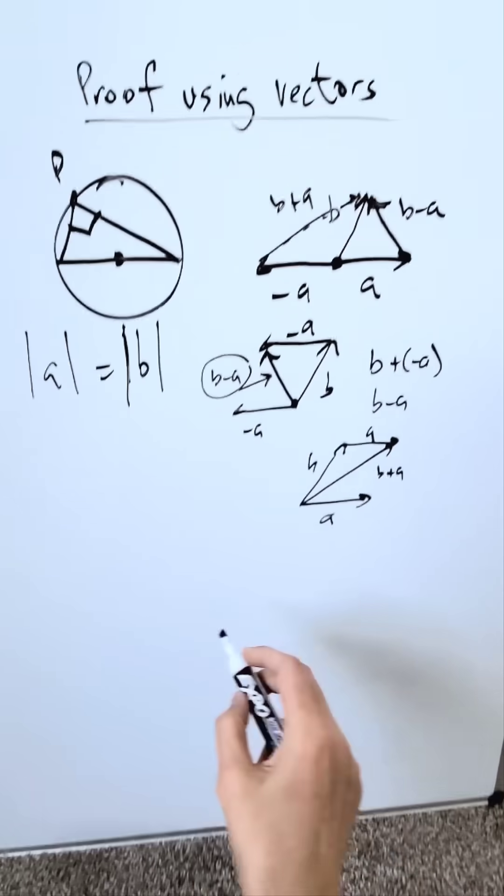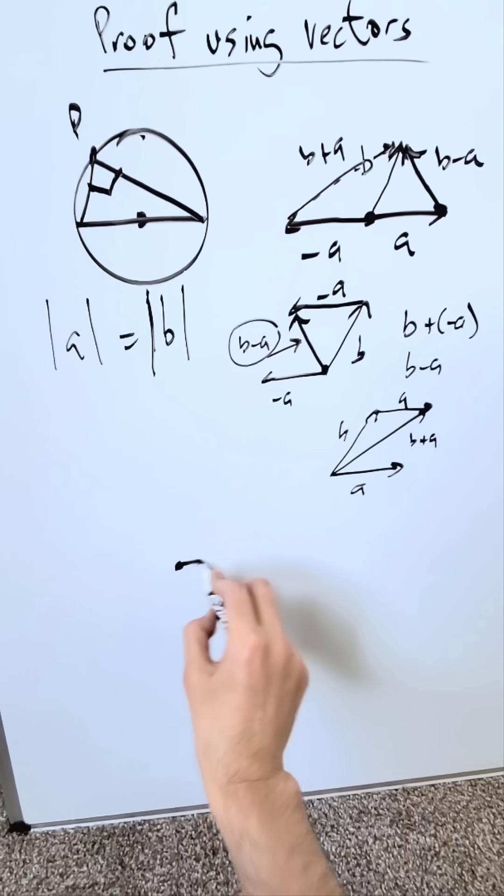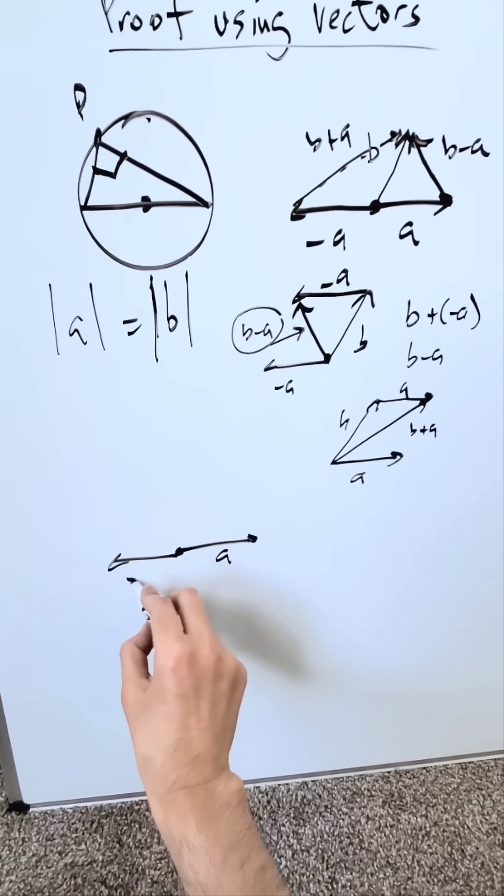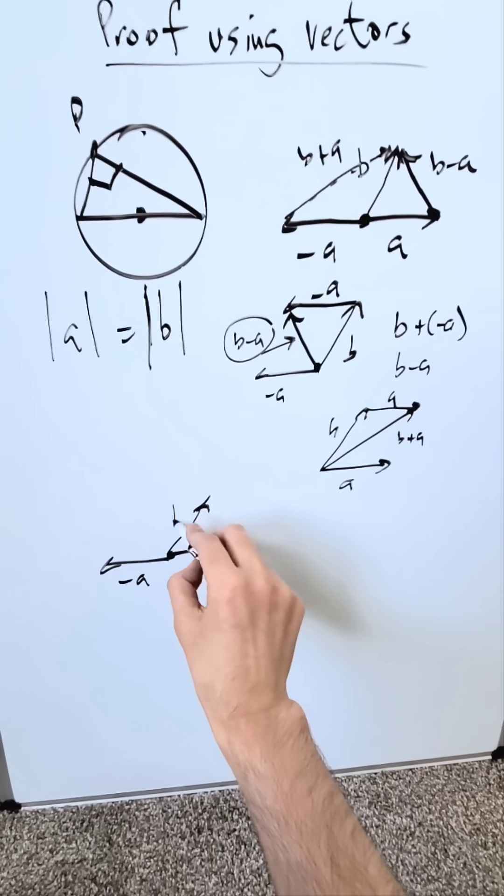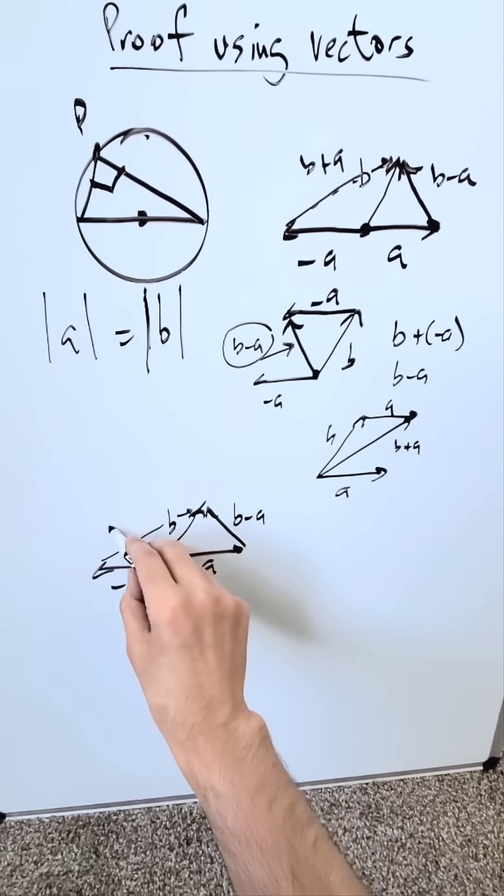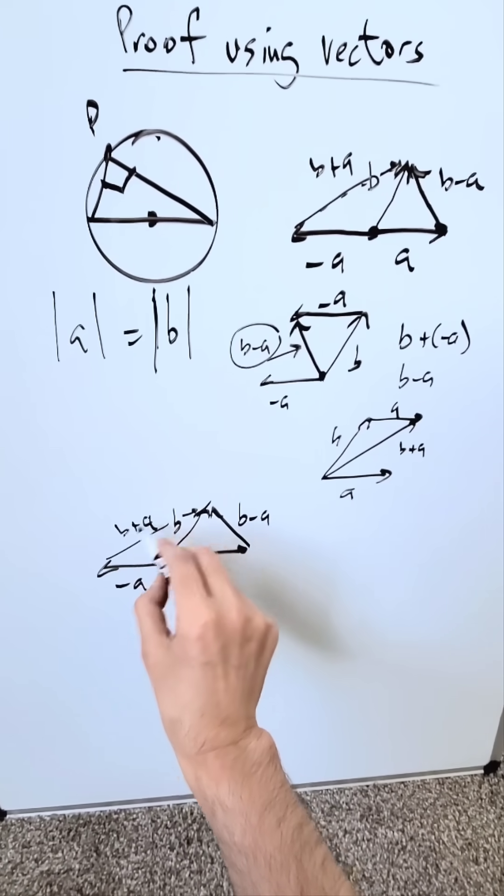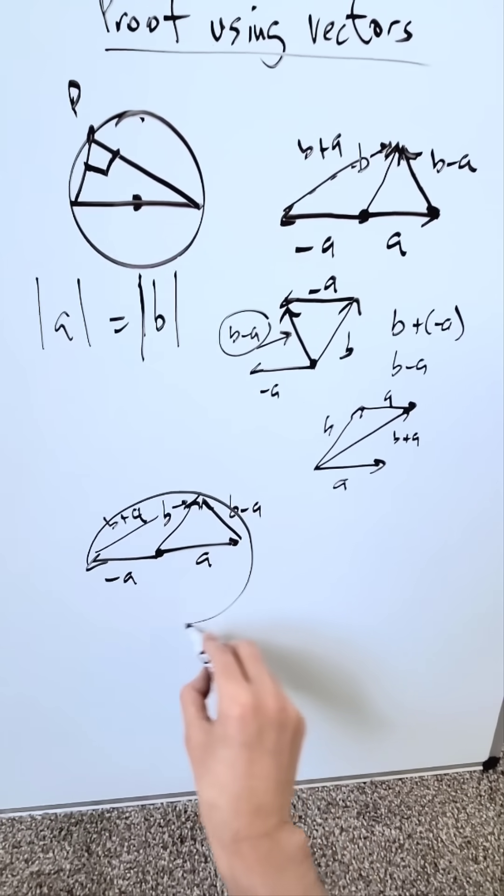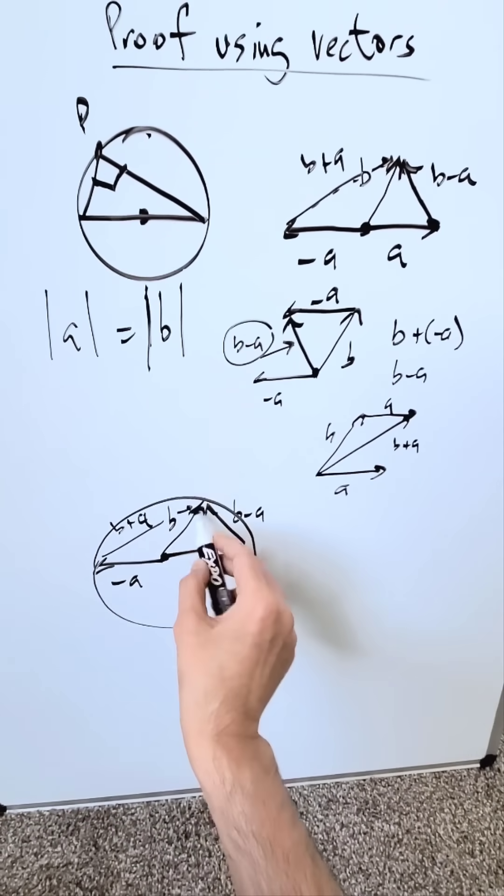Now we have everything we need. We'll just redraw our representation. Here's our A. Here's our minus A. Here is B. This here is B minus A and this here is B plus A and you know the representation of a circle is rounded like this. So you're seeing a diameter and an inscribed triangle.